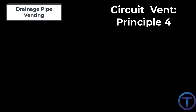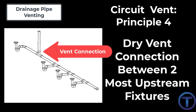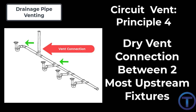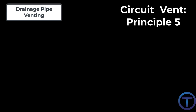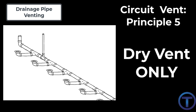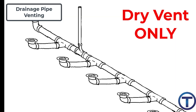Circuit vent principle four: the circuit vent connection to the dry vent must be between the two most upstream fixture drain connections. From there, it provides airflow downstream to all of the other horizontal drain connections in that circuit. Circuit vent principle five: the circuit vent pipe must be a dry vent and is not allowed to receive discharge from any fixtures. This is what really sets it apart from the wet vent, because the vent must be dry.